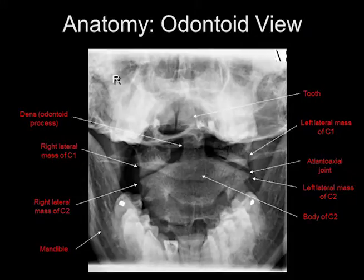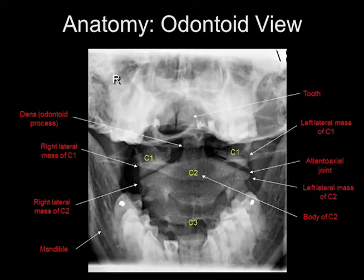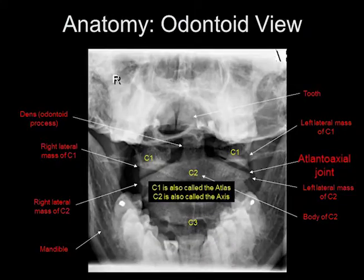On the odontoid view, you can see the teeth. You can also see the odontoid process very well. You can see the lateral masses of C1 and C2. As well, you can see the mandible and the body of C2. You can also see the atlantoaxial joints, which are also called the C1-C2 joints.